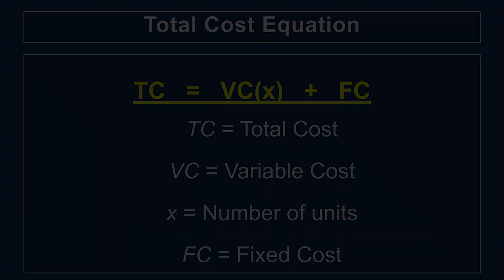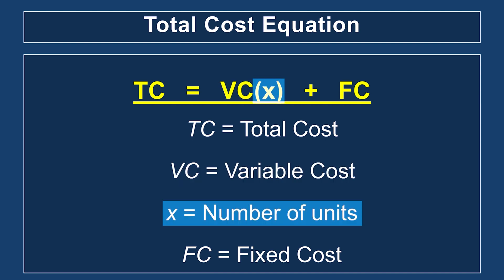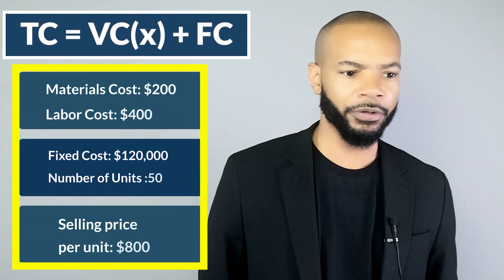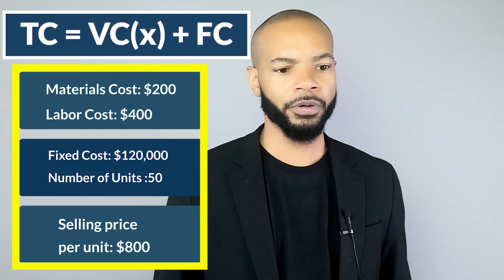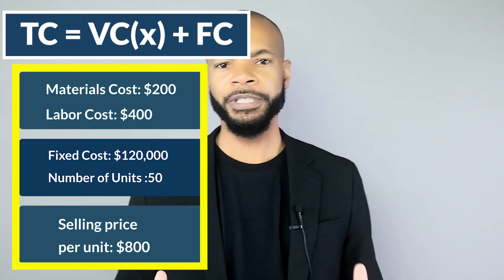The total cost equation is: variable costs multiplied by the number of units, plus your fixed cost. When doing this calculation, we're really trying to determine whether we're making a profit based on the number of units we're producing. In this first example, I have the material cost and labor cost per unit, the fixed cost, the number of units we're producing, and the selling price per unit — because we need to know how much revenue we'd make after selling the product.